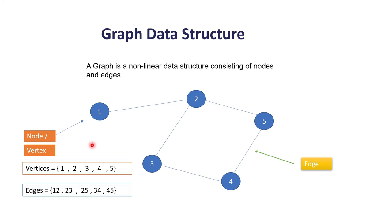Here if you see, I have a total of five vertices — one, two, three, four, five — and total edges are five: one-two is one edge, then two-three, two-five, three-four, and four-one. So graph data structure is a combination of vertices and edges.